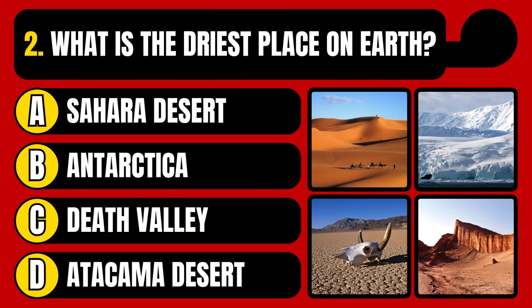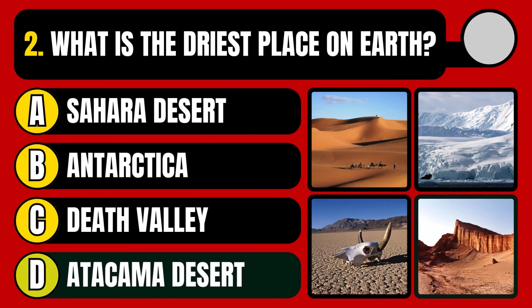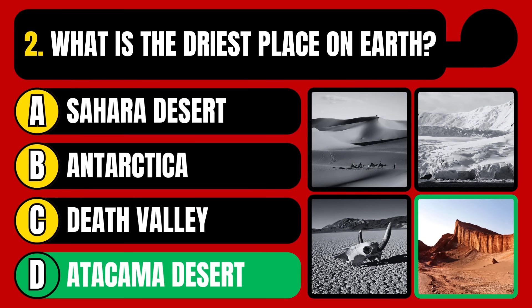What is the driest place on Earth? Sahara Desert, Antarctica, Death Valley, or Atacama Desert? The correct answer is option D, Atacama Desert.